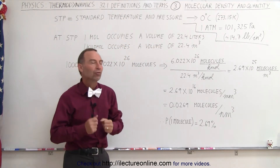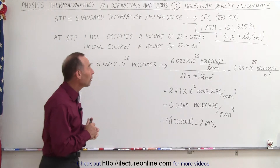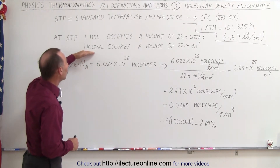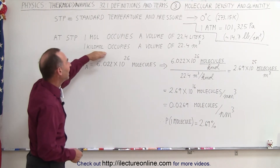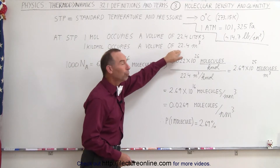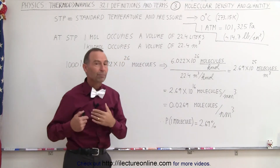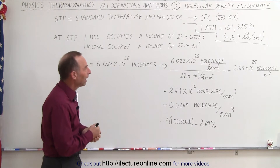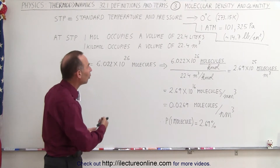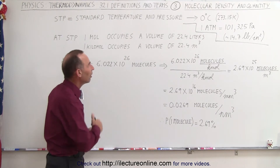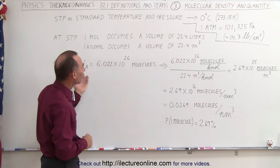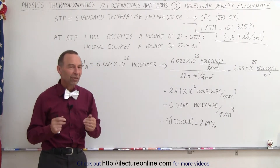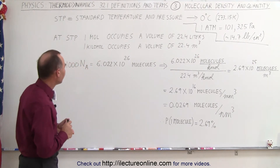That's typically used in chemistry. But when we deal with physics, we sometimes talk about kilomoles — a thousand moles — and then it occupies a volume of 22.4 cubic meters, because meters, of course, is a standard unit. So sometimes we talk about kilomoles and a volume in cubic meters rather than moles and a volume in liters. Remember, there's a thousand liters in one cubic meter.